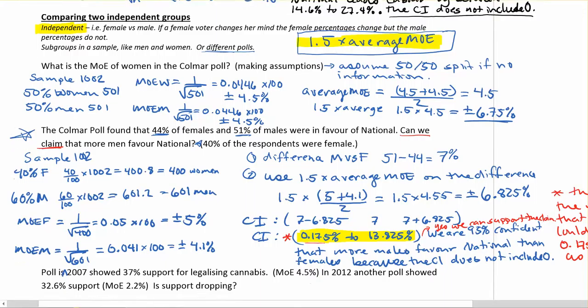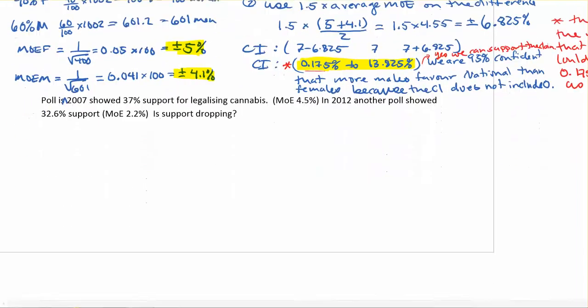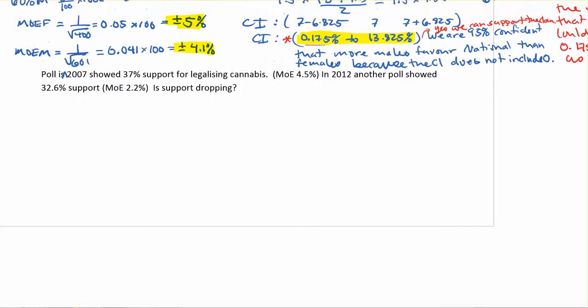And previously, we've had to actually calculate what those margin of errors are just from the sample size. Like we did here with the men and the women in the last example, using the sample size of 400 females and 601 males. In this case, we don't have to go quite that far, because part of that calculation has been done for us. They're actually telling us what the margin of error is for each of those polls. So we don't have to worry about calculating it ourselves, but we do need to find our 1.5 and the average.